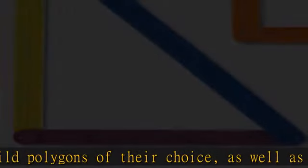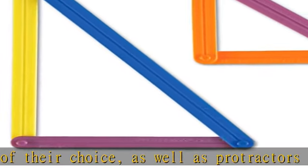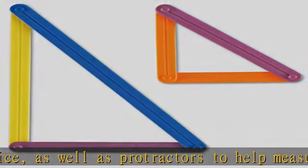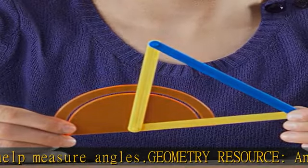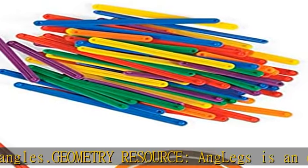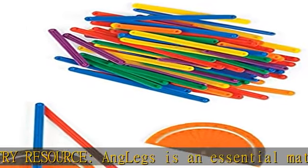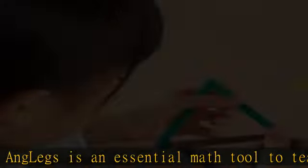Shape geometry: snap together the Anglex that come in six lengths and six colors to create a multitude of different geometric shapes like triangles, squares, polygons, and rectangles.